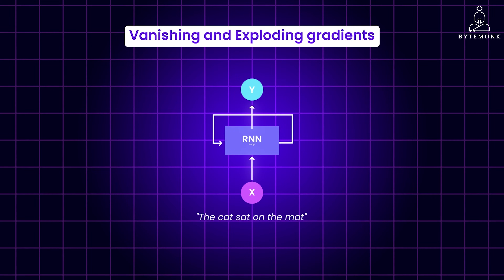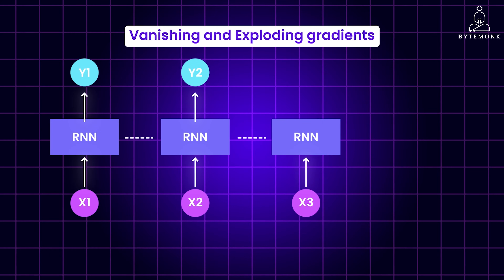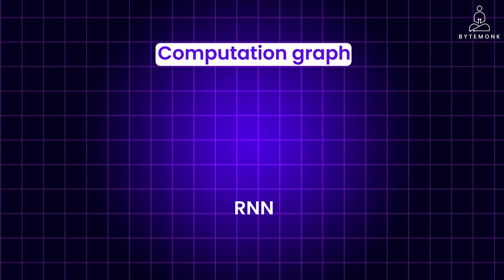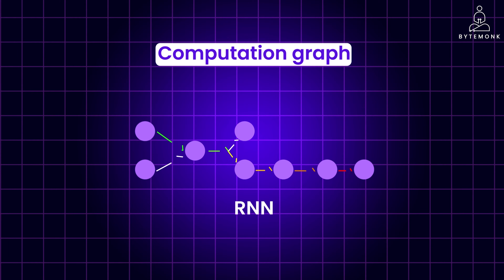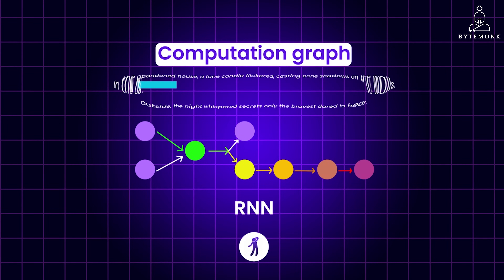In my previous video, I showed how most advanced systems in natural language processing use recurrent neural networks or RNNs. RNNs process words one by one, and this makes them slow, especially for long sentences. They struggle to capture relationships between words far apart, making it hard to understand how different parts of a sentence relate to each other.